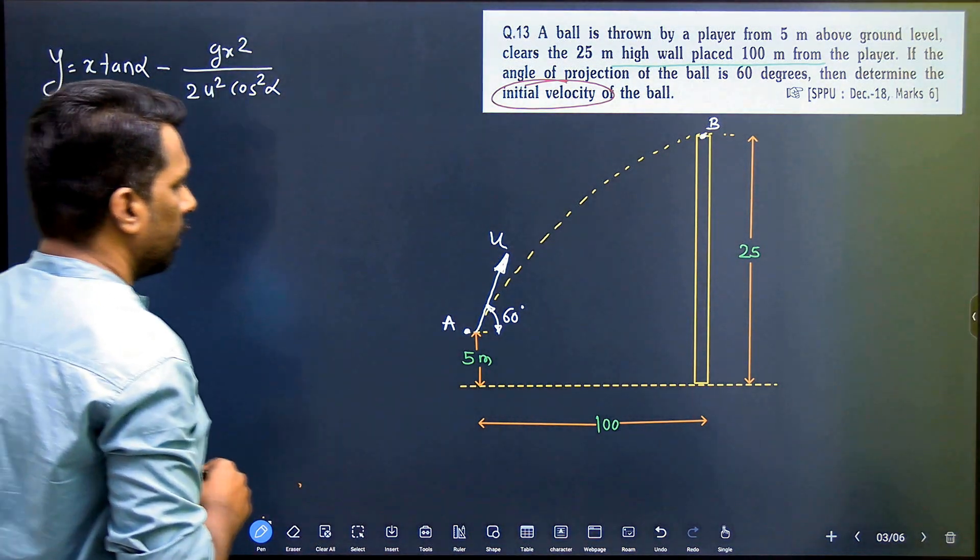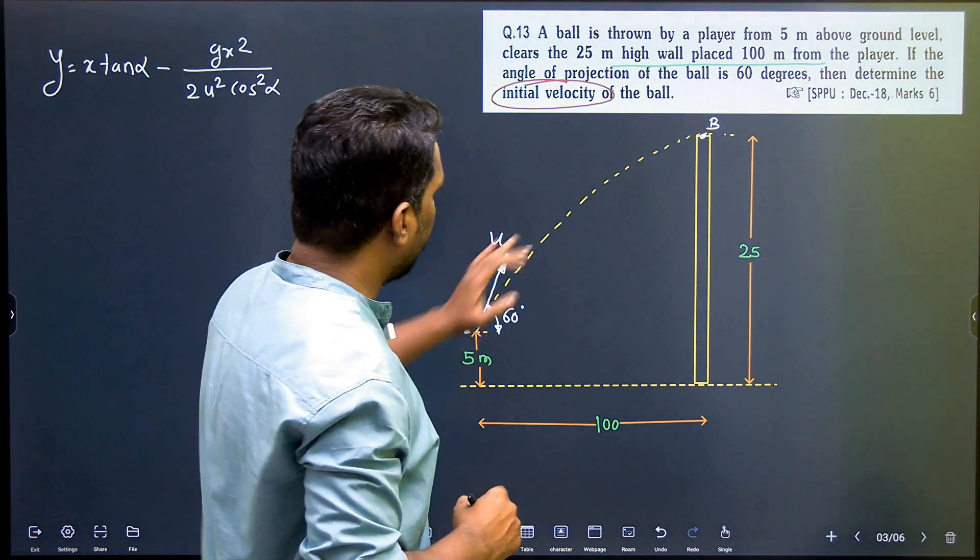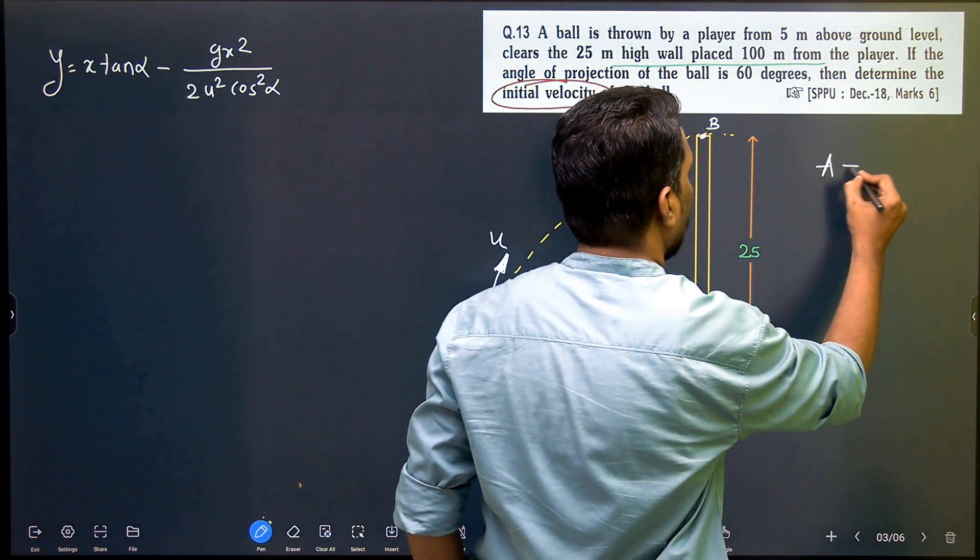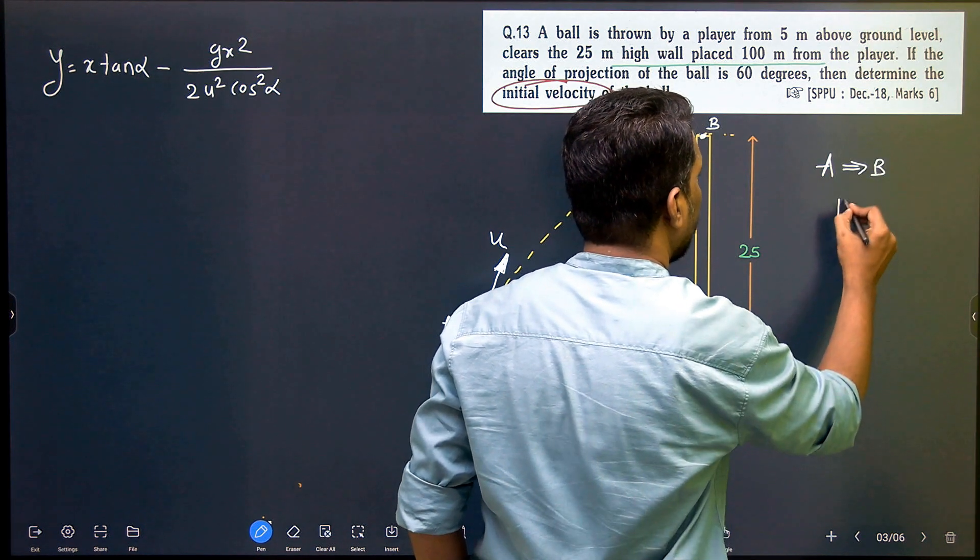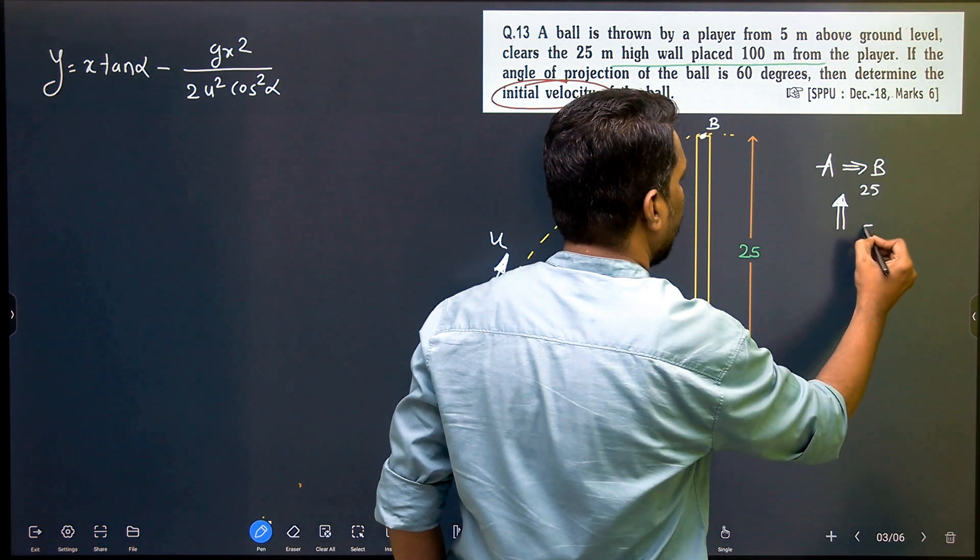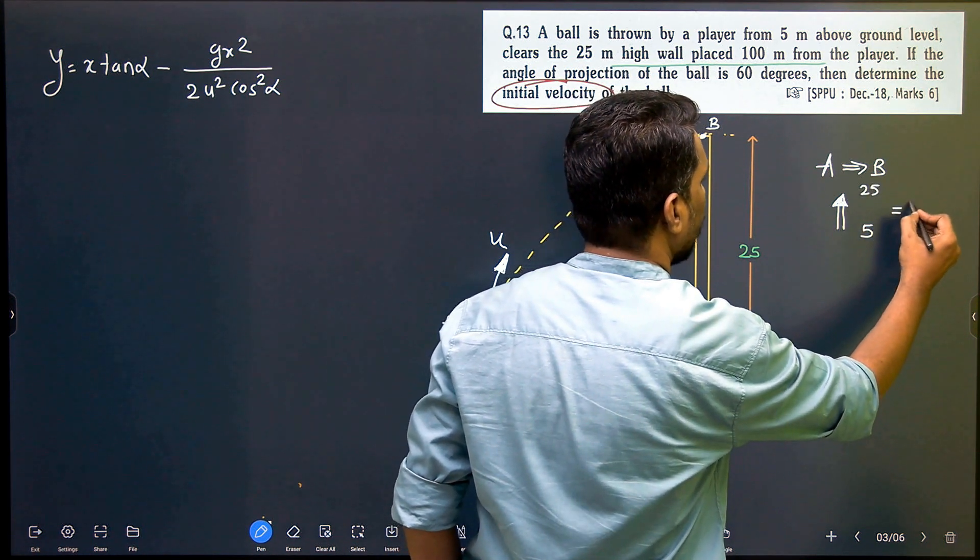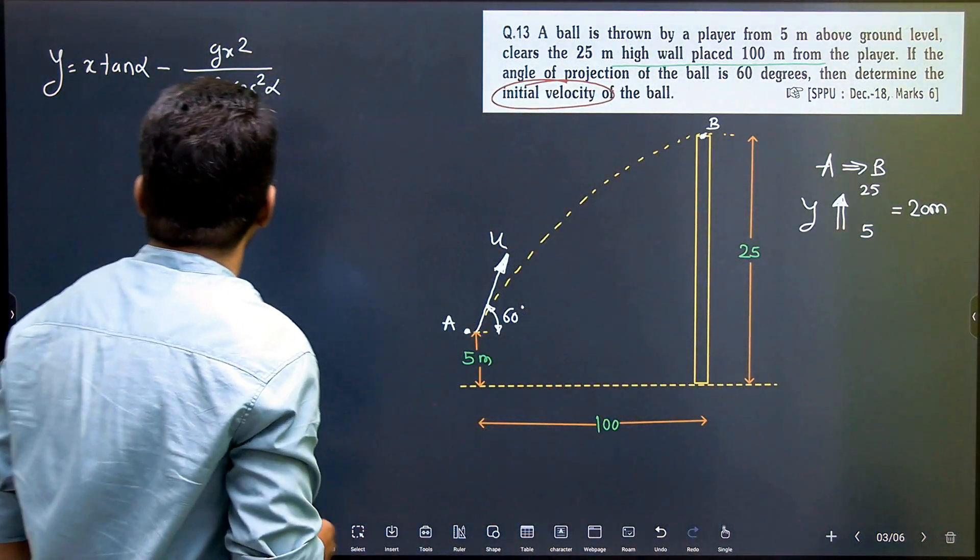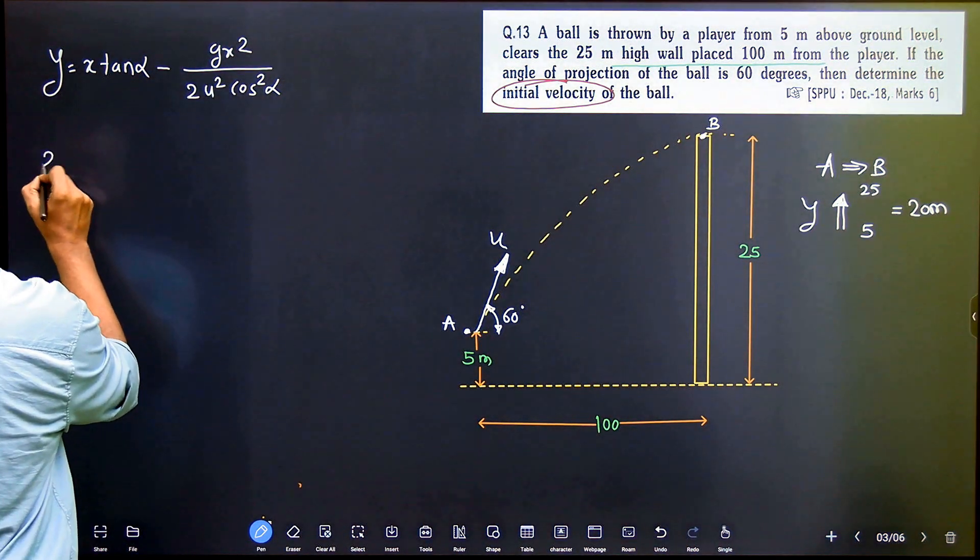Here we have to show Y, that is A to B motion. A to B motion is vertically upward. This is 25 and this is 5, so we have to subtract. It is 20 meters. Y is equal to 20 and it is vertically upward, so it is positive.